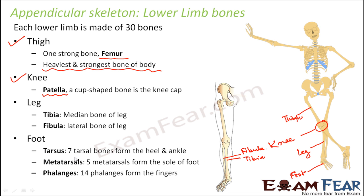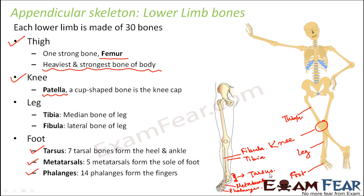Finally, the foot has many different types of bones. The fingers of the foot will have phalanges — the big toe has two phalanges and other toes have three phalanges each, giving a total of 14 phalanges. You have metatarsals, which form the sole or bottom of the foot, and tarsal bones, which form the heel and the ankle. Adding all these bones together also gives a total of 30.